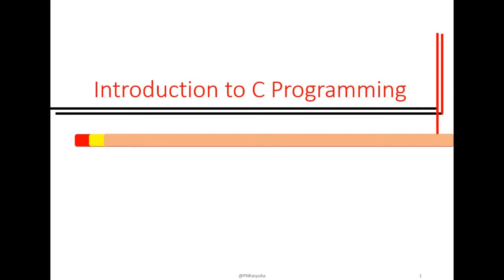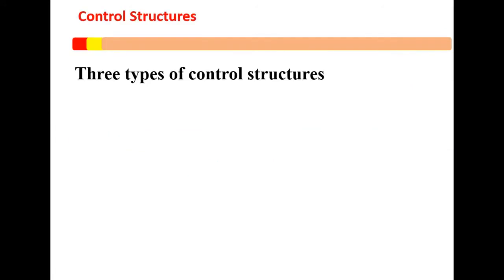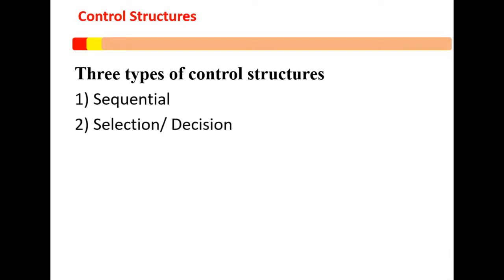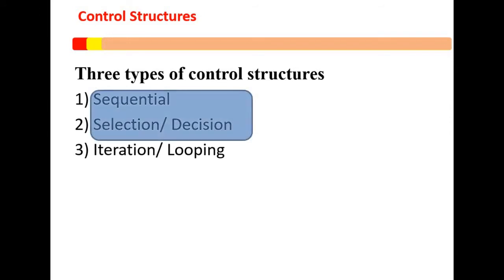Hello and welcome back to Introduction to C Programming. In lesson 3 today we are going to be looking at control structures. We have three types of control structures: sequential, selection or decision, and iteration or looping. However, today we are going to be looking at sequential and selection. Under selection we are basically going to look at the decision structure only.